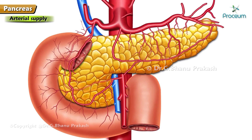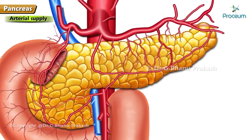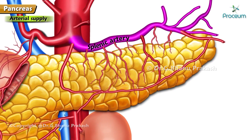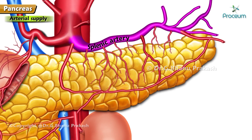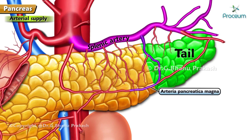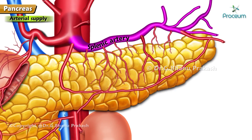Arterial supply: the pancreas is a highly vascular structure supplied by the following arteries. The splenic artery, a branch of the celiac artery, is the main source of blood supply to the body and tail. As many as 10 branches may pass from the splenic artery to the body and tail. One large branch, the arteria pancreatica magna, arises near the tail end and runs towards the neck. Another small branch, the arteria caudae pancreaticae, runs towards the tip of the tail.